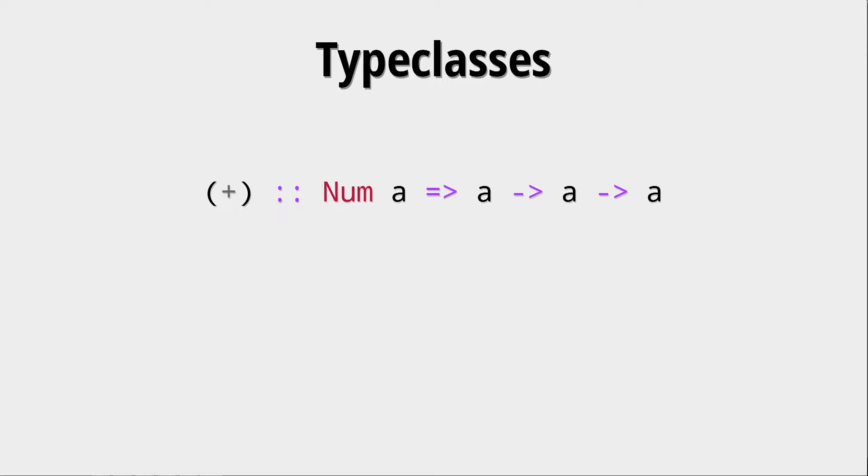But then we cannot make the function totally polymorphic because then we would allow it to, for example, add trees or something like that. And of course, adding trees, I mean, how is that defined? We don't really know how that is defined.